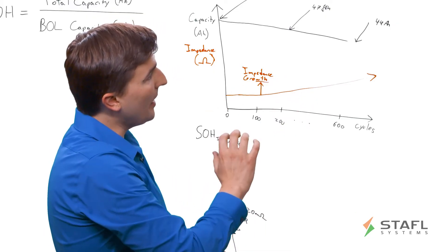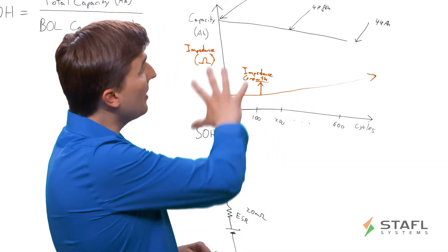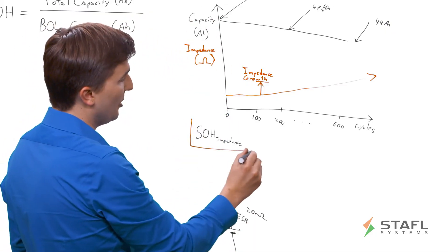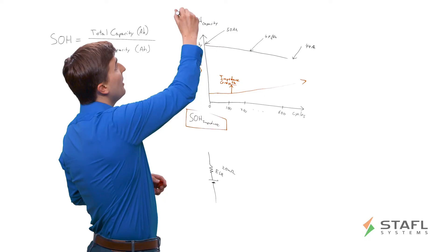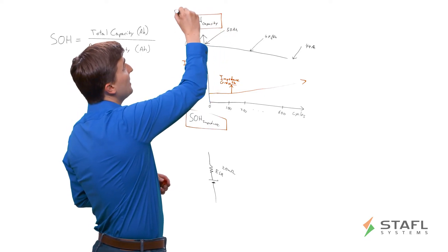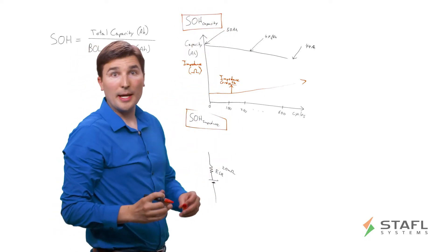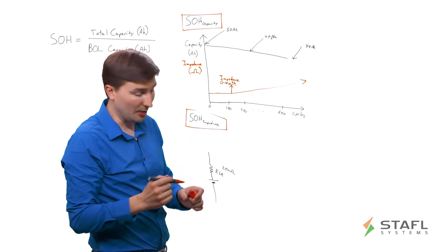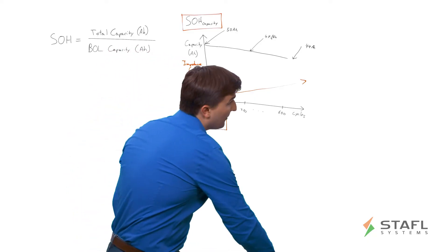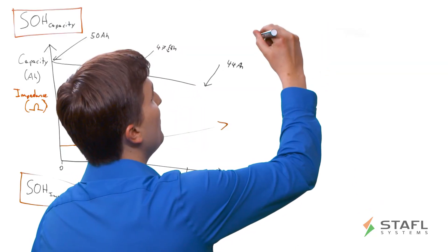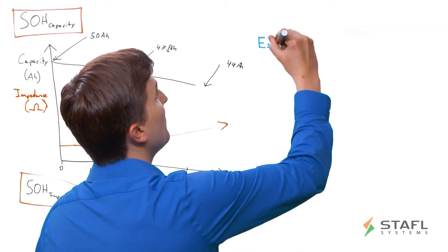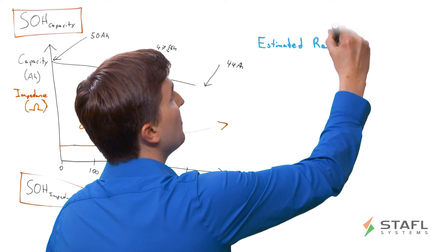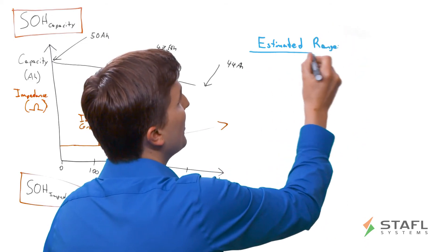So going back to an important concept to think about when you're talking about SOH. So just in summary, this is SOH impedance and this is SOH capacity. So as you can imagine, if you're trying to come up with an estimated range remaining algorithm, for example, for an electric vehicle, and you want to say estimated range remaining. So how do we actually calculate that?